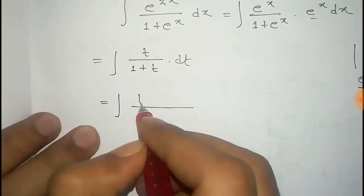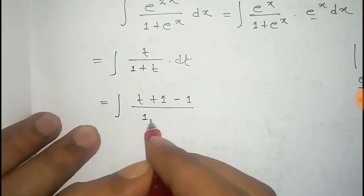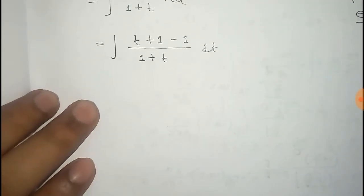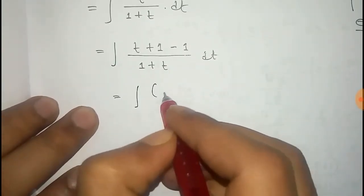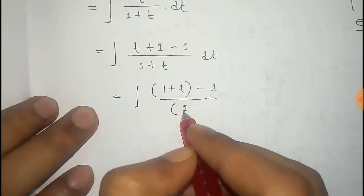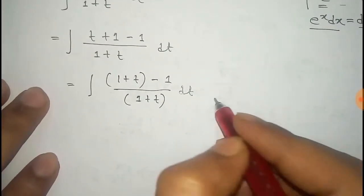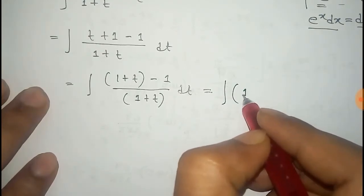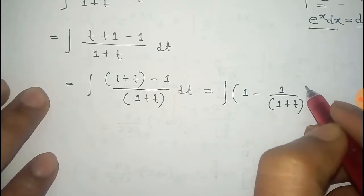We can write the term t as t plus 1 minus 1, so t by 1 plus t becomes 1 plus t minus 1 by 1 plus t. Dividing both terms by 1 plus t, we get 1 minus 1 by 1 plus t, into dt.